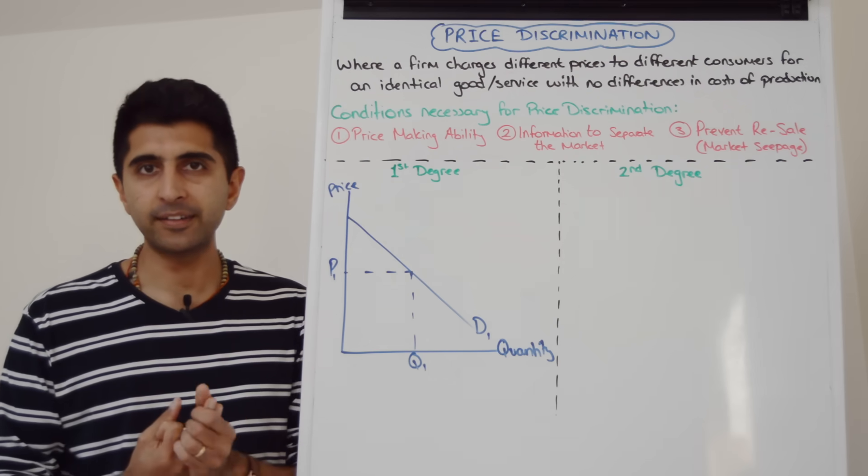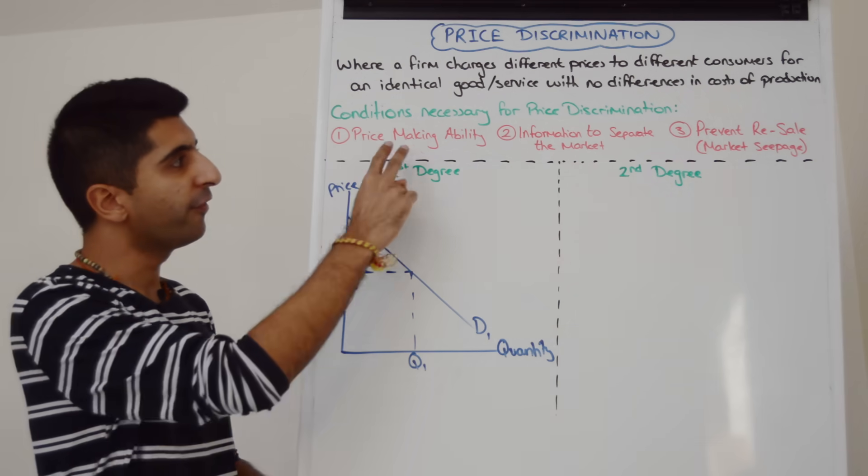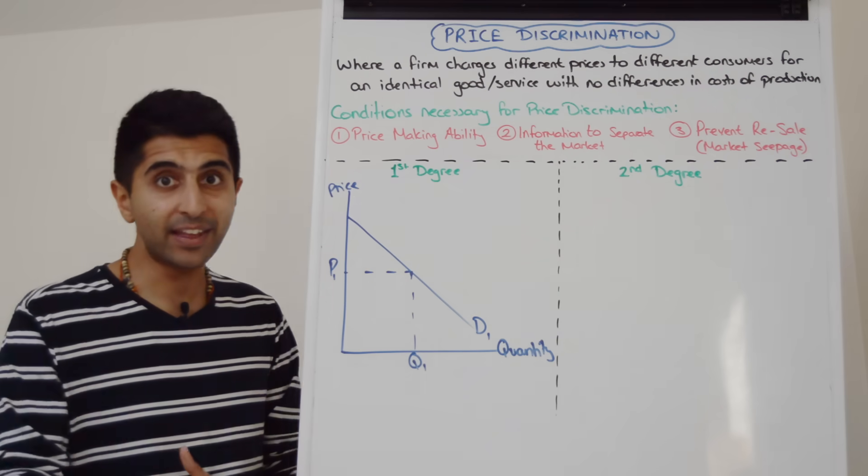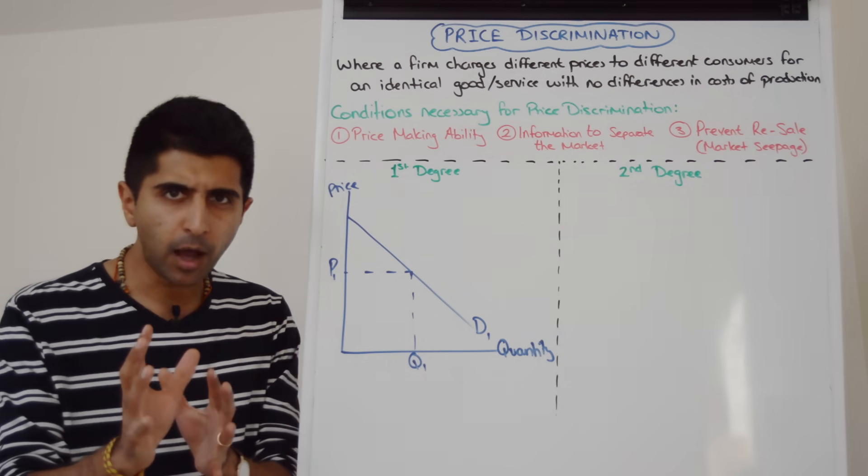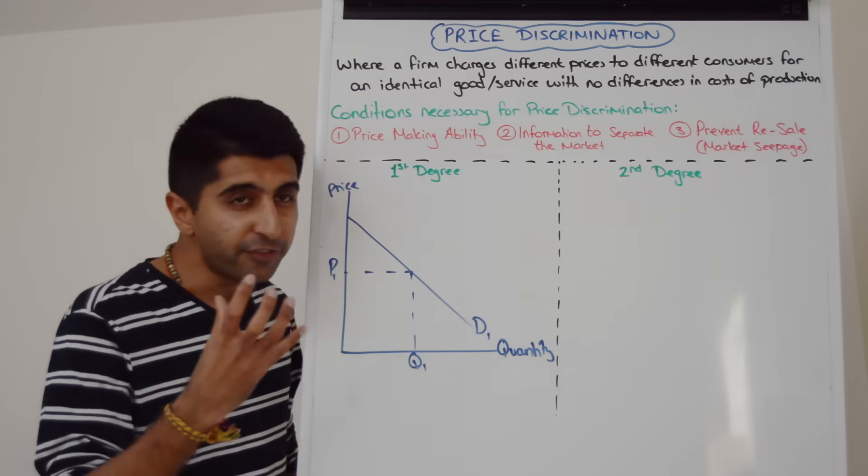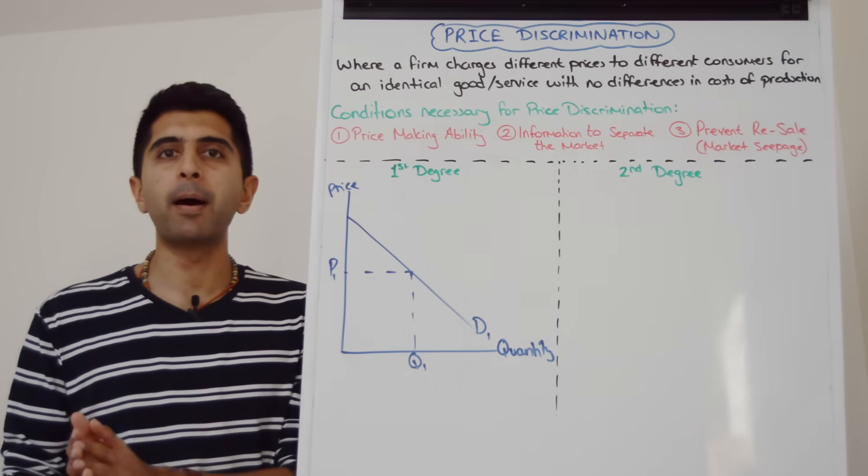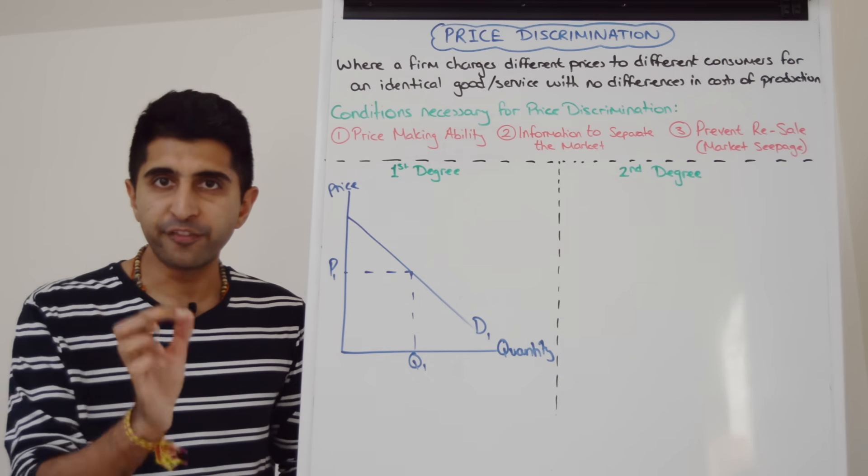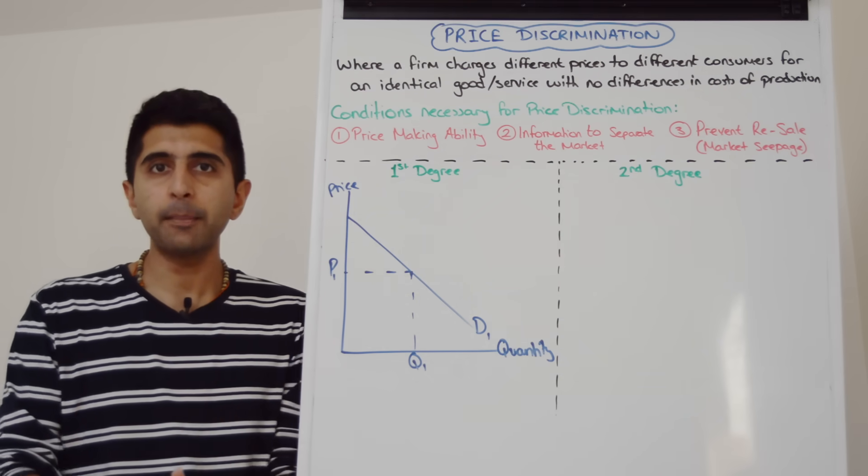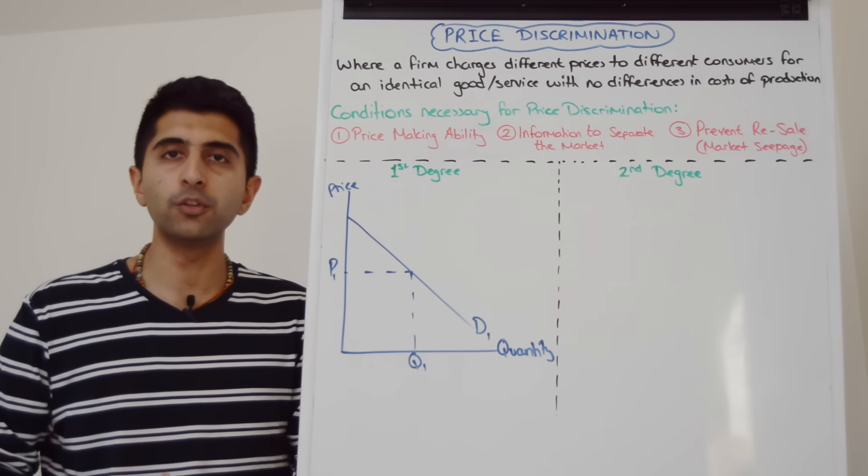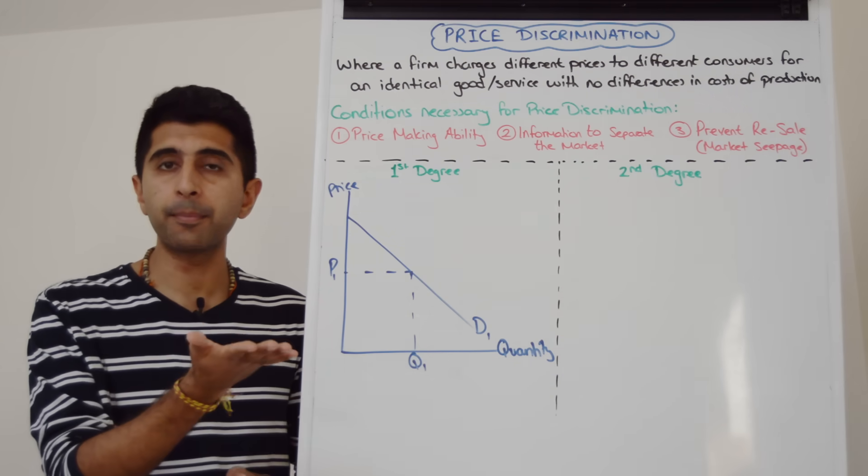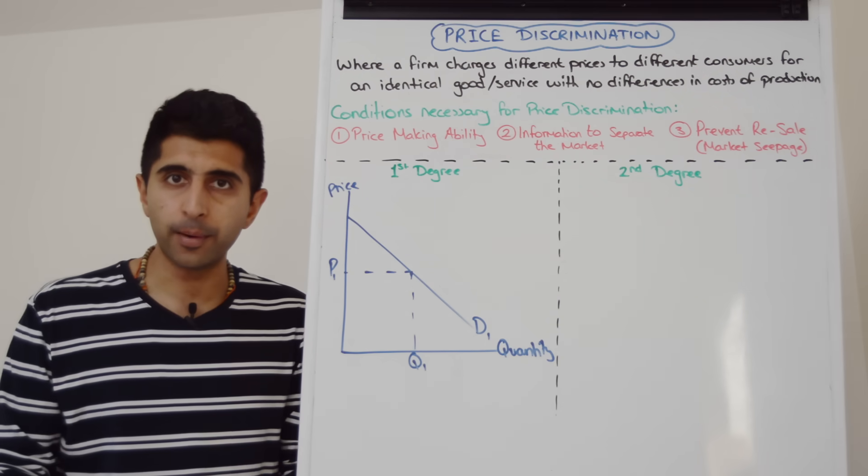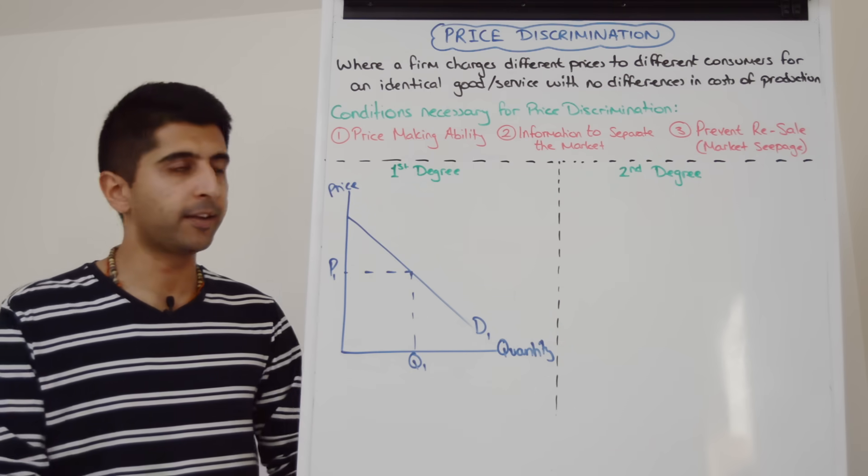Well, there are three conditions necessary for a firm to be able to price discriminate. First of all, they've got to have some kind of price-making ability, the ability to set prices, and for that they need monopoly power, some kind of legal monopoly power. They need to have information to be able to separate the market into different PEDs, separate and identify different consumers via price elasticity of demand. So for example, they need to be able to identify groups of consumers with price inelastic demand so they can charge higher prices, but also identify consumers with price elastic demand where they can charge lower prices and thus are able to maximize their profits in the process.